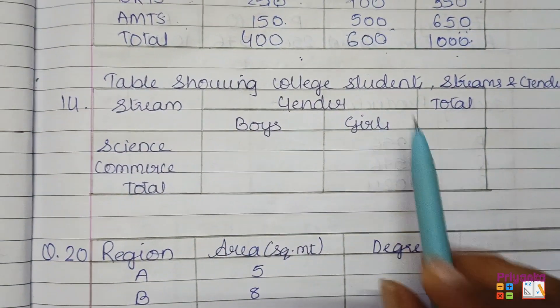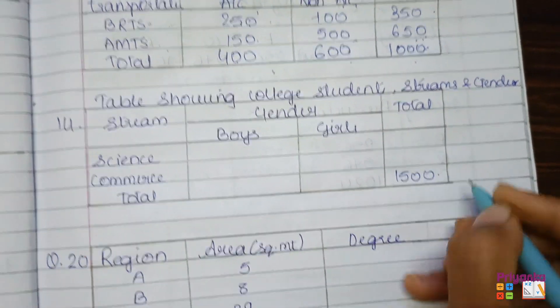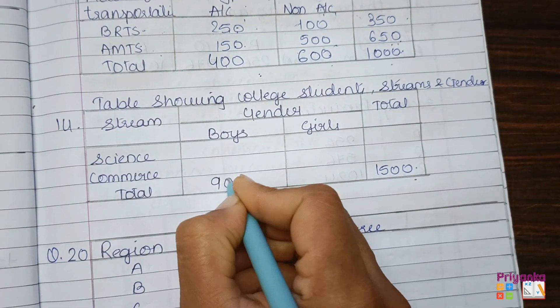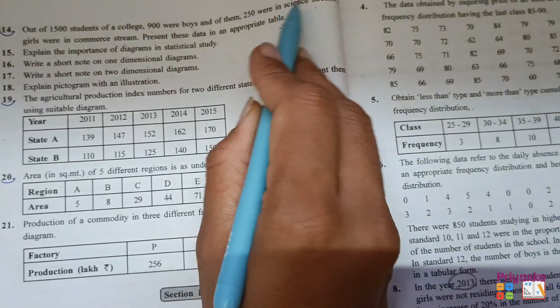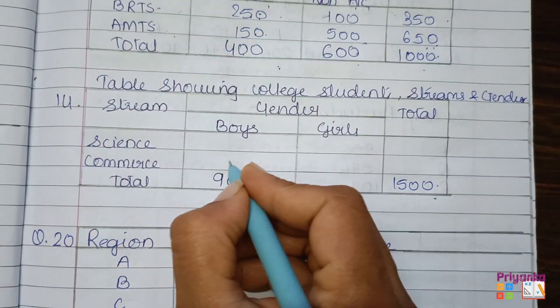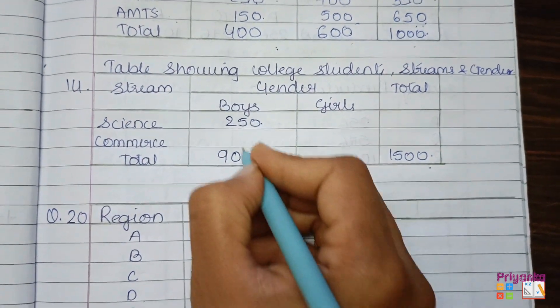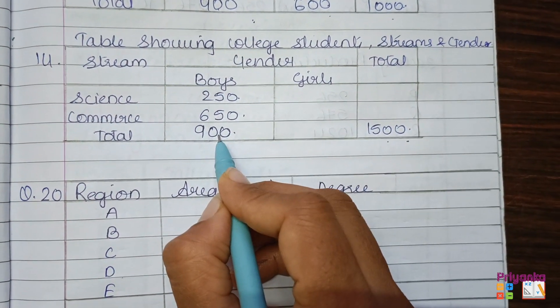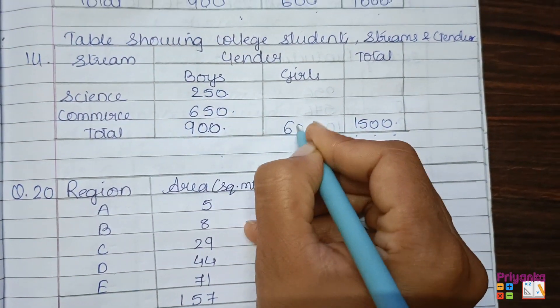From the table I made, the total is 1500 students, out of which 900 were boys. We write 900 for boys. Of them, 250 were in the science stream, so 900 minus 250 gives the remaining boys in commerce. Then 1500 minus 900 means the remaining 600 are girls.